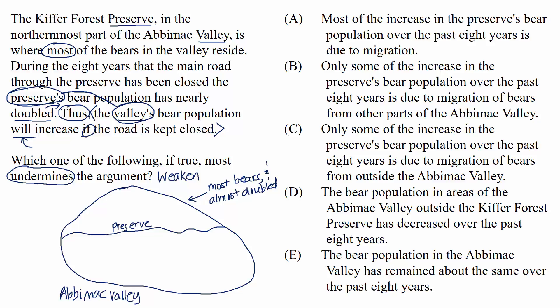Choice A: Most of the increase in the preserve's bear population over the past eight years is due to migration. This could be tempting, but it doesn't actually hurt the argument. If bears migrated from other parts of the valley, that would weaken the argument since bears just moved from one part of the valley to the other and didn't actually increase the valley's population. But we could also learn that bears migrated from outside of the valley, which wouldn't weaken the argument at all and might even strengthen it. So we can eliminate this choice — it doesn't give us enough information.